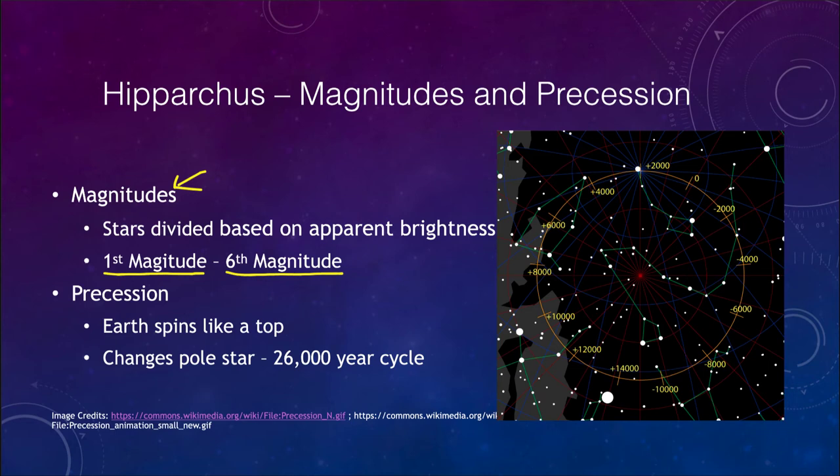And essentially, what he did was give us backwards magnitudes. In most things that we measure, bigger numbers are brighter, or hotter, or longer. Here in magnitudes, the smaller the number, the brighter the star. So everything is backwards. So it would be like a smaller temperature meaning a hotter object. And that's the way magnitudes still work today.